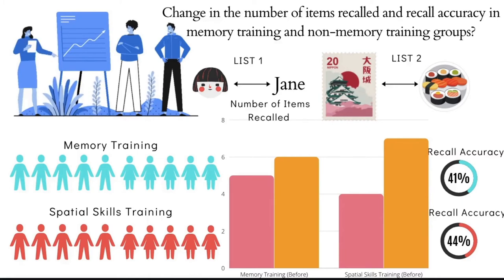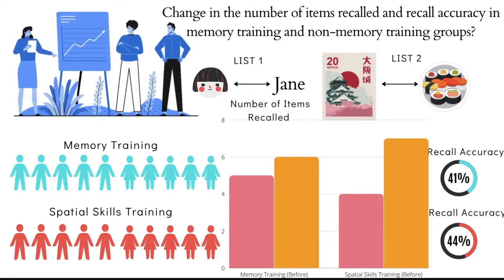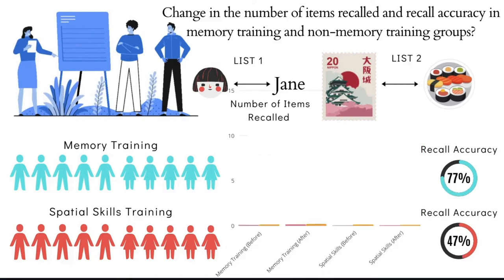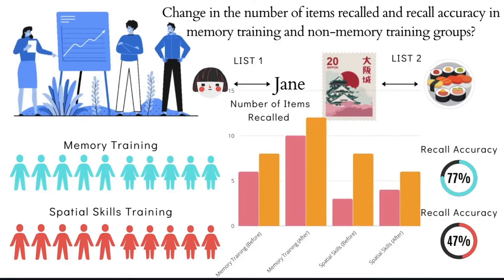We then subject the participants in each group to active training sessions. In the memory training, participants learn about different strategies to better encode, store, retrieve, and recall information — in other words, they get better in their memory capacities. In the spatial skills group, they learn how to better their spatial skills, which has nothing to do with their memory. Following this active training, the participants retake the recall test and we account for their post-training measures. The mock data shows that the memory training group has done fairly well in both the number of items recalled and recall accuracy compared to the spatial skills training group.